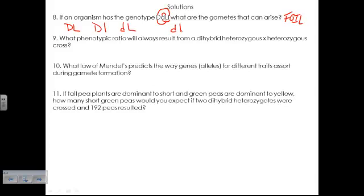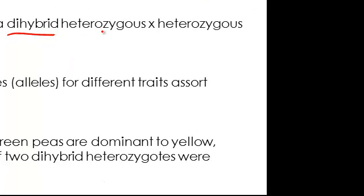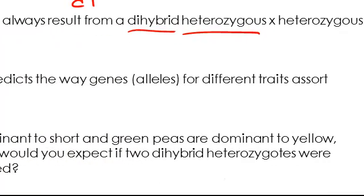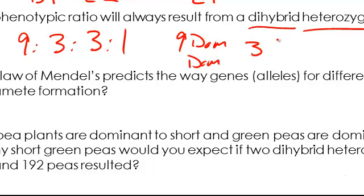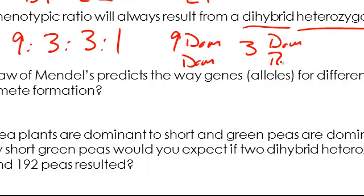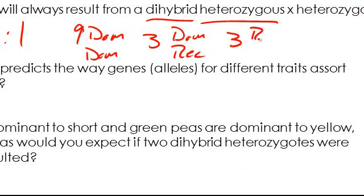What phenotypic ratio will always result from a dihybrid heterozygote times dihybrid heterozygote cross? That is always going to be nine to three to three to one. And in this ratio, what you need to understand is that the nine is going to be dominant and dominant, in other words dominant for both traits. The three would be dominant for the first and then recessive for the second. Another three is going to be recessive for the first and dominant for the second. And then the last one is going to be recessive for both traits.